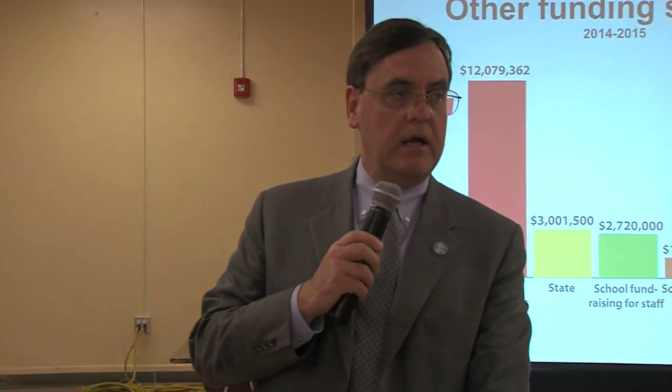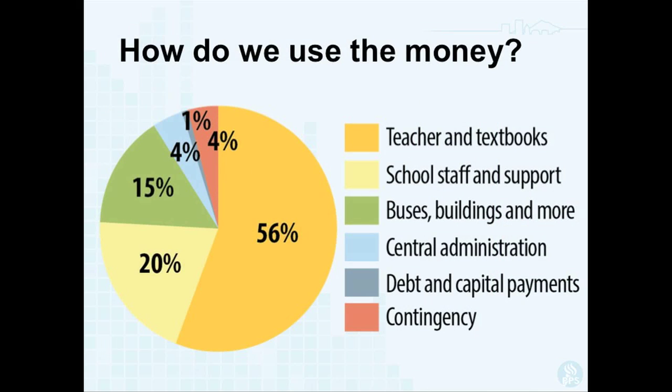In the general fund, where the bulk of our budget is, here is a breakdown of how we use the money: 56% goes for teachers and textbooks — directly in the classroom. 20% of the money goes for student support services. Buses, transportation, buildings — custodians and maintenance — and utilities make up another significant portion. In total, 91% of our money goes to those three broad categories. 4% is on central administration, 1% on debt and capital payments, and 4% is held in contingency for unforeseen circumstances.